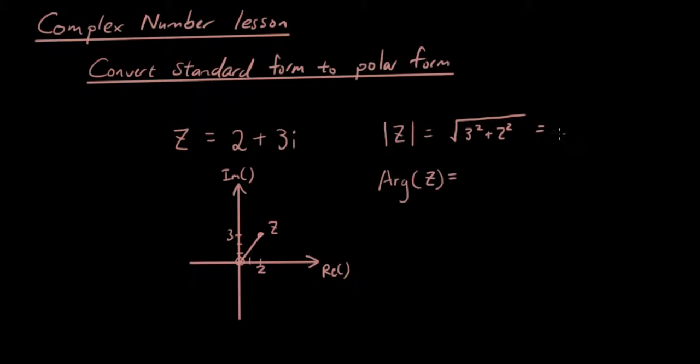So it's square root of 9 plus 4, which is square root of 13. Now let's try to get the argument of z.